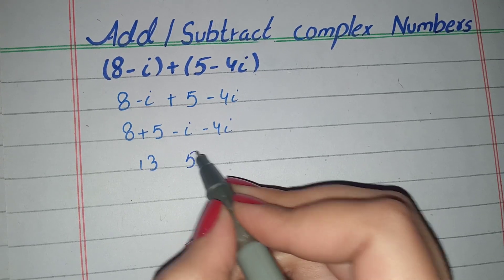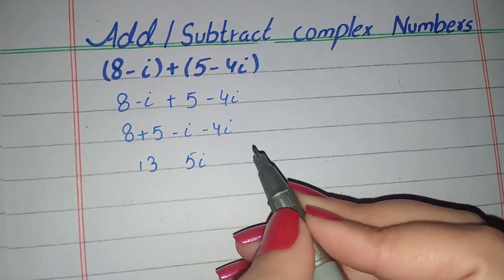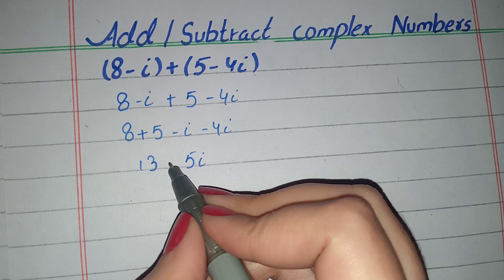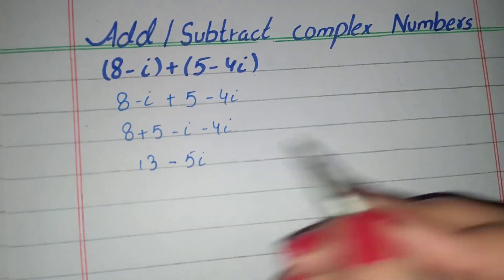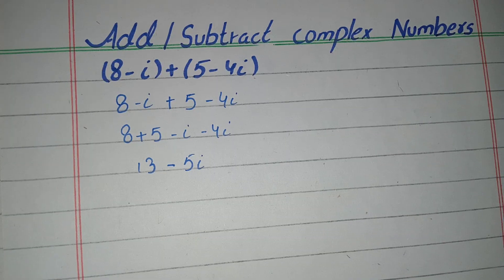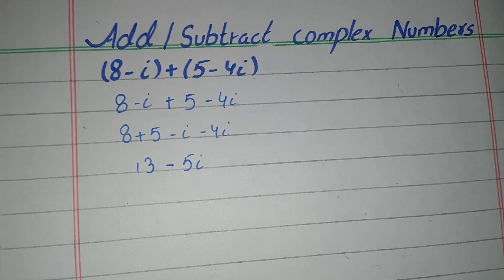And it will become 5i, and the sign will be negative with it. So in this way we solve complex numbers.